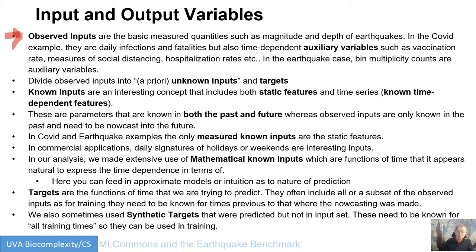In the case of COVID, there are auxiliary variables which are also observed: vaccination rates, measures of social distancing, and so on. In the earthquake case, we have auxiliary data which are the pin multiplicity counts — either the total multiplicity for magnitude greater than zero, or the more sensitive measure for magnitude greater than 3.29. We then divide observed inputs into targets and unknown inputs: unknown inputs are ones you have to observe, and targets are those inputs which you also want to predict.